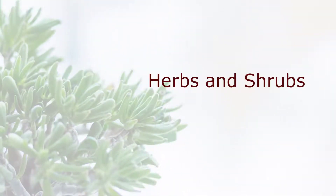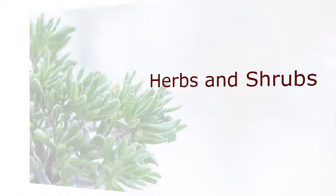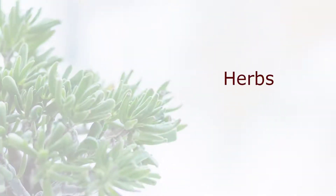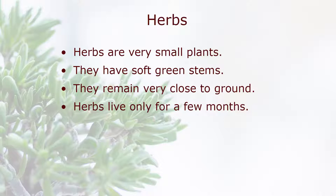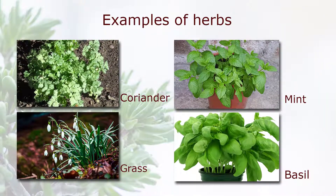Herbs and shrubs. Herbs are very small plants. They have soft green stems. They remain very close to the ground. Herbs live only for a few months. Examples of herbs: coriander, grass, mint, and basil.